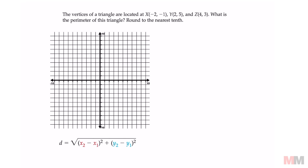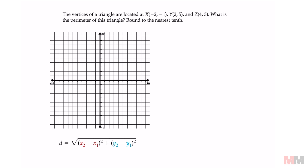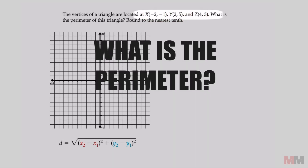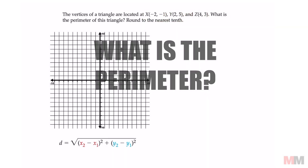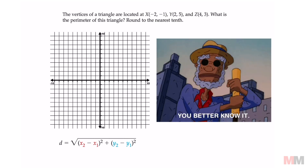I'm going to go over a famous and most common distance formula question. I see this often. The vertices of a triangle are located at these points. What is the perimeter of this triangle? Round to the nearest tenth. Let's start off by plugging in these points.